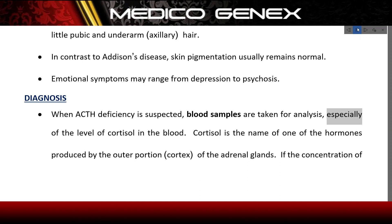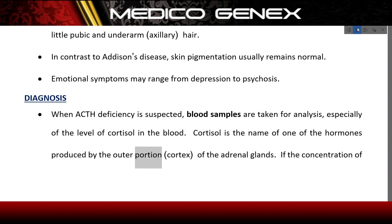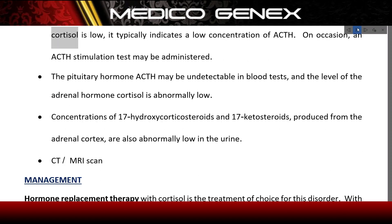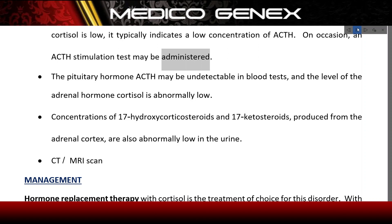When ACTH deficiency is suspected, blood samples are taken for analysis, especially to measure the level of cortisol — a hormone produced by the outer portion (cortex) of the adrenal glands. If cortisol concentration is low, it typically indicates a low concentration of ACTH. An ACTH stimulation test may also be administered; the pituitary hormone ACTH may be undetectable in blood tests.